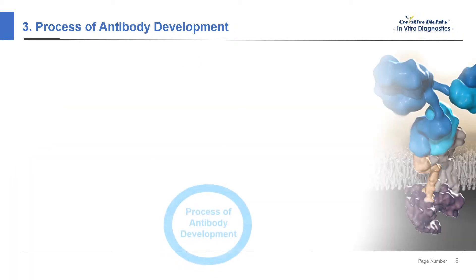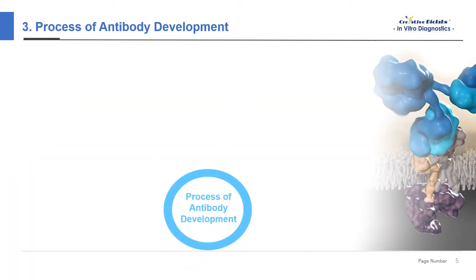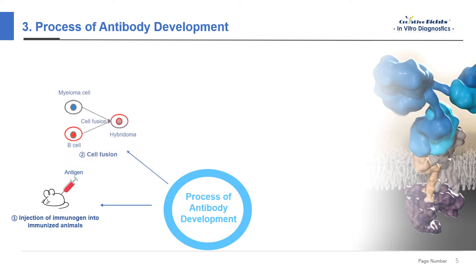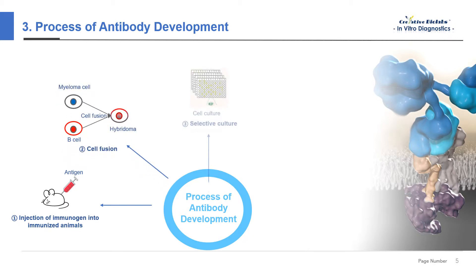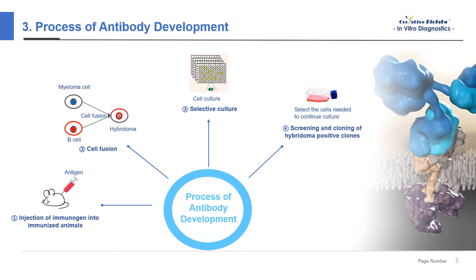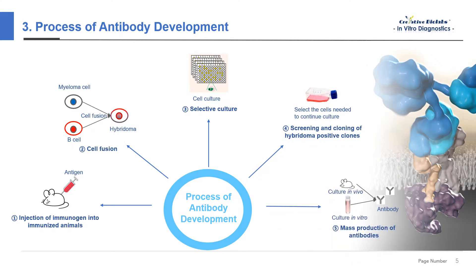The development of in vitro diagnostic antibodies is roughly divided into five steps: 1. Injection of immunogen into immunized animals. 2. Cell fusion. 3. Selective culture. 4. Screening and cloning of hybridoma positive clones. 5. Mass production of antibodies.